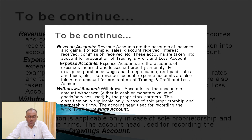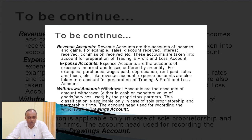Examples of expense accounts include purchase of goods, wages paid to labour, depreciation, rent paid, and rent and taxes. When we prepare the trading and profit and loss account to find out gross profit as well as net profit, we consider revenue income and revenue expenses. Direct expenses are shown on the debit side of the trading account and indirect expenses on the debit side of the profit and loss account.